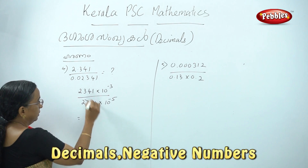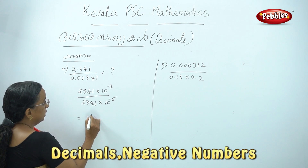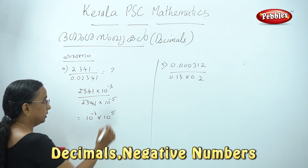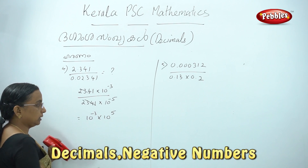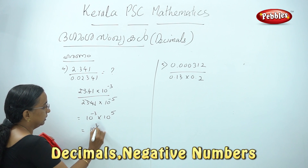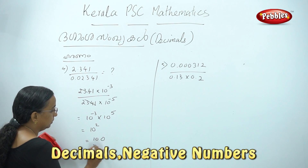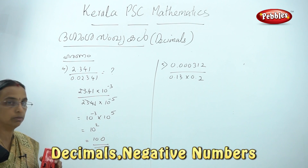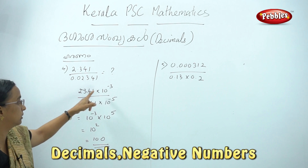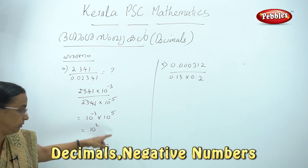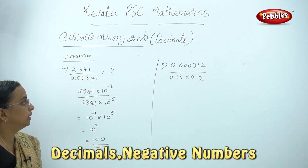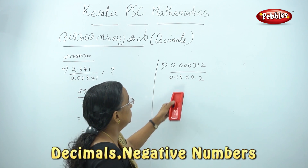Now, let's get this. 10 minus 3 is equal to 10 minus 5. Because minus 5 is equal to 9 plus 5. Now, this is 10 minus 2. That is, we get 100. I am able to do this. In this approach, 3, 2, and 3. It is not 1. We can do this.